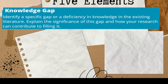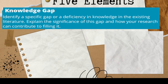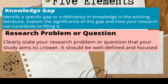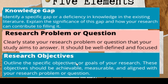You base it from the review of related literature that you have read. For example, say your study observed that there is a lack of staff in the hospital during weekends — a previous study touched on it but did not completely address or solve it. So you are conducting this study to address that gap. The second element is the research problem or question: it should clearly state your research problem or question that your study aims to answer, and it should be well-defined and focused — similar to your statement of the problem with your specific questions.